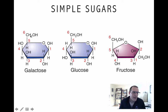Let's start with galactose. We've got one carbon here. Remember, in organic chemistry, when you draw a bend in a line, that's a carbon. And we know there's a carbon there because it's making four bonds — one up to the oxygen, one down to the hydrogen, up to the left to the oxygen, and down to the left to another carbon. So there's one carbon, two, three, four, five, and then six.